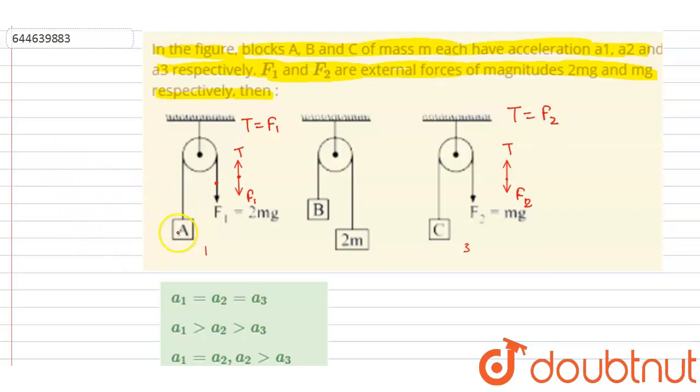If I write down the acceleration of this A, we know that the tension is F1. So I am writing the force equation on A: T minus mg is equal to m times a1. In situation one, acceleration is a1. Put the value of tension: it is 2mg minus mg, which equals mg, equals m times a1. So a1 is equal to g.